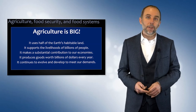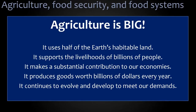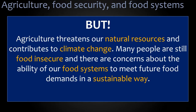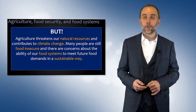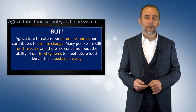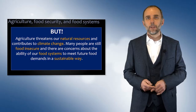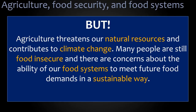So to wrap it up: agriculture is big. It uses half of the world's habitable land, supports the livelihoods of billions of people, makes a substantial contribution to our economies, and produces goods worth billions of dollars or euros every year. It continues to evolve thanks to technology to meet our demands. But there's a big but — agriculture threatens our natural resources and biodiversity through land use change. Remember, 50% of our land is now used for agriculture, and much of the natural habitat — forests and savannahs — has been converted. It also contributes to climate change through emissions. As a result, many people are still food insecure, and there are concerns about the ability of our food systems to meet future food demands in a sustainable way.